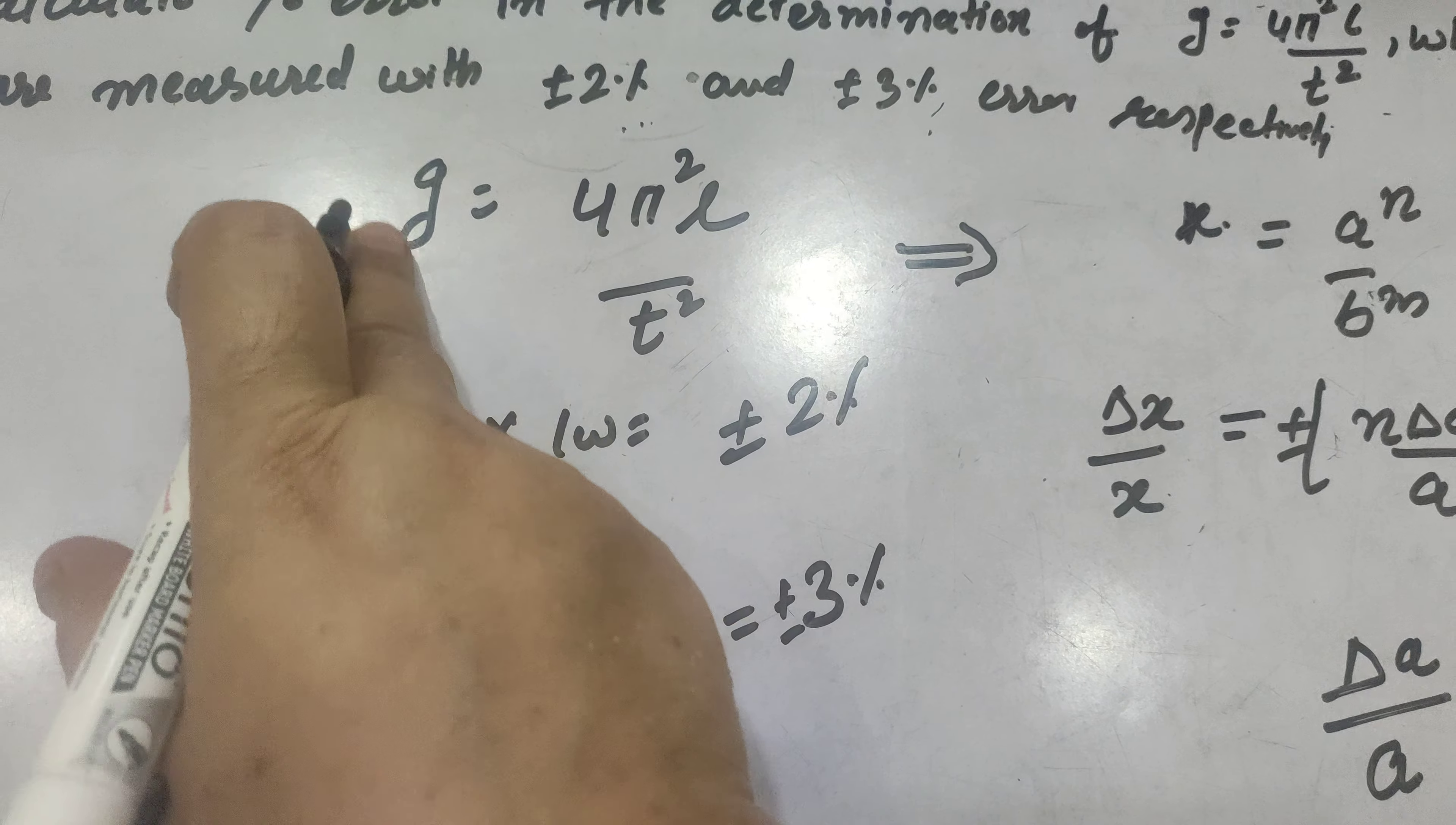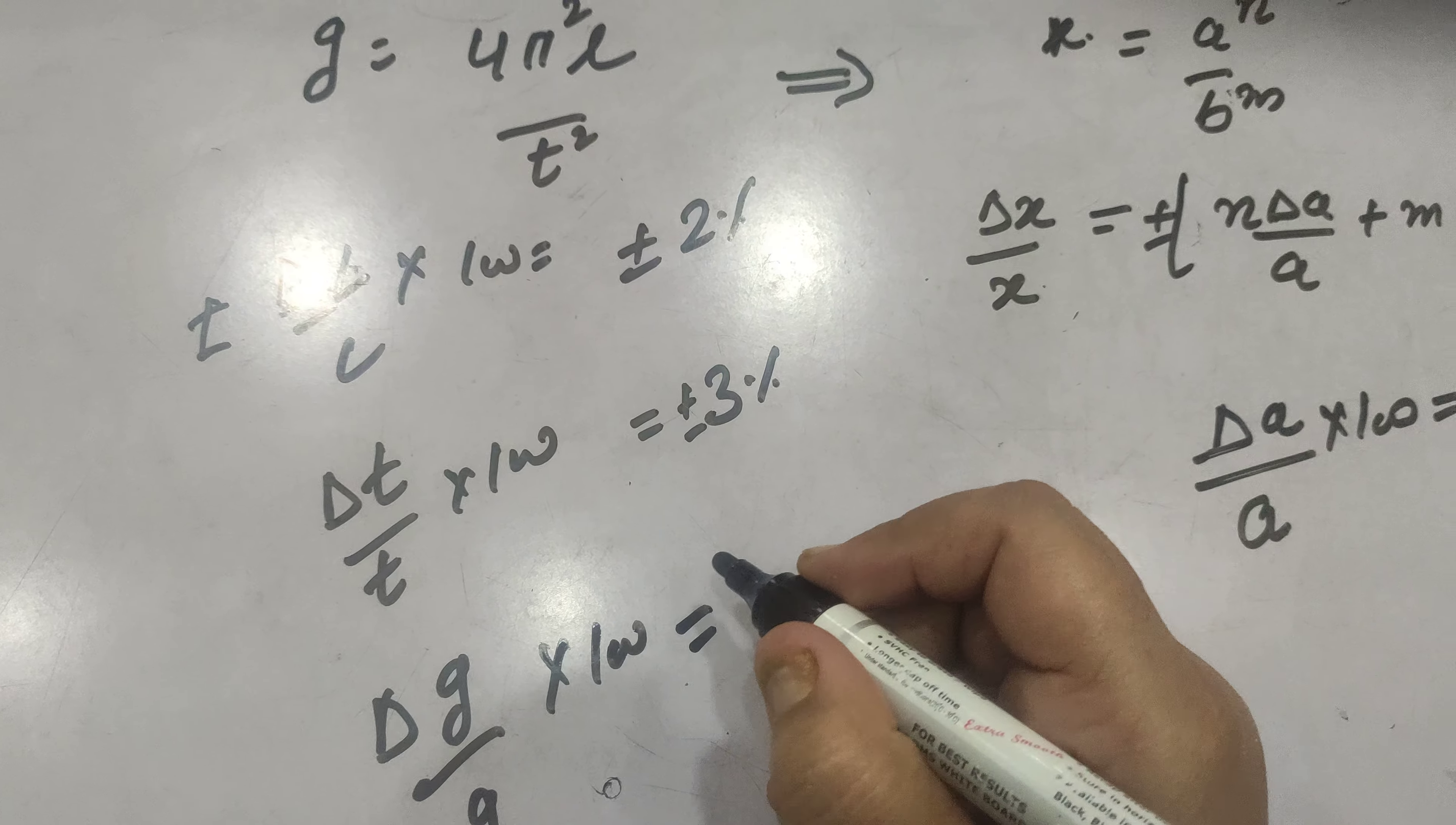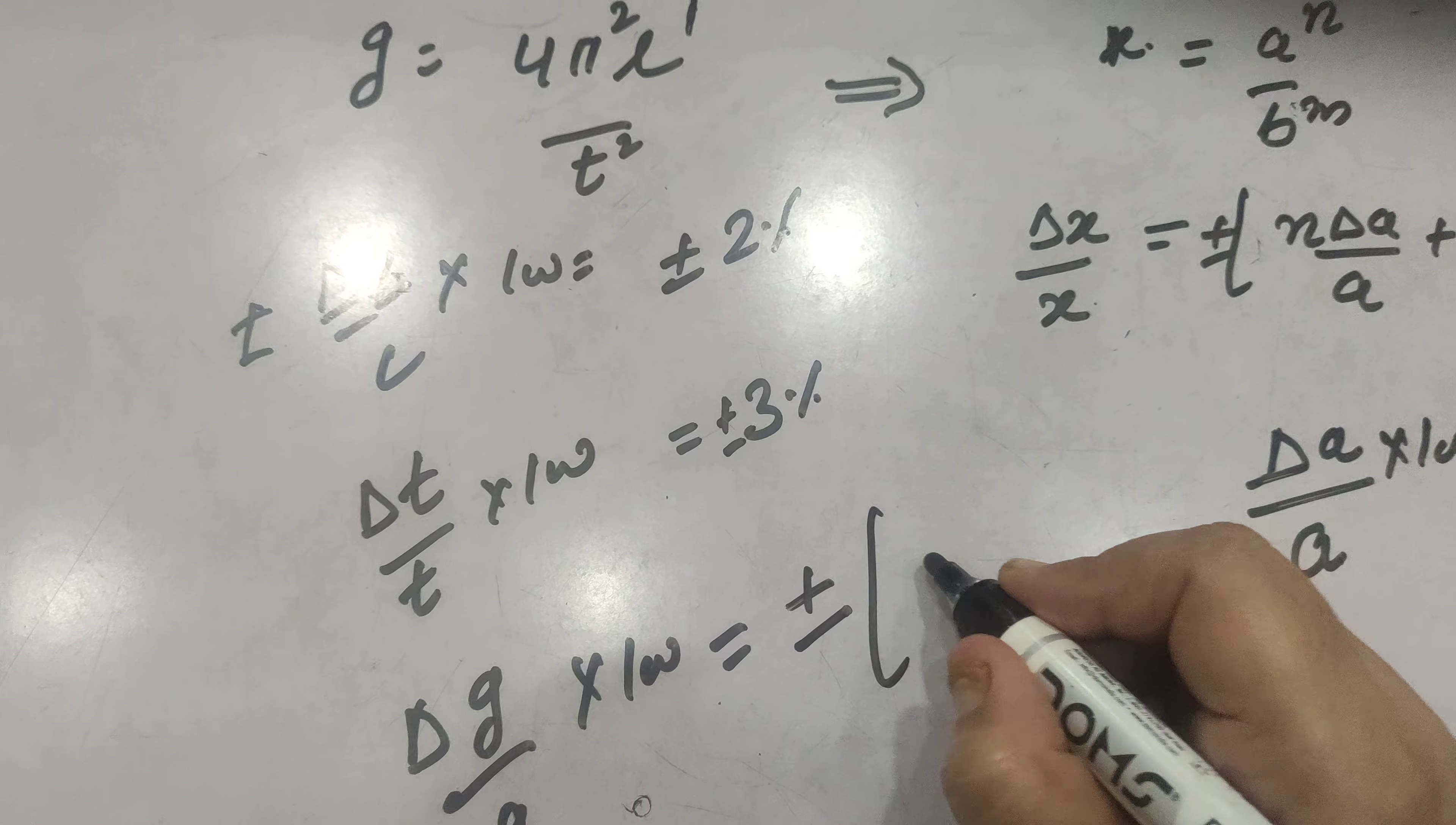So now we need to find out the percentage error in G. So for percentage error in G, we will write delta G by G into 100 is equal to plus minus, L else the power is 1, so delta L by L into 100 plus T to power is 2.